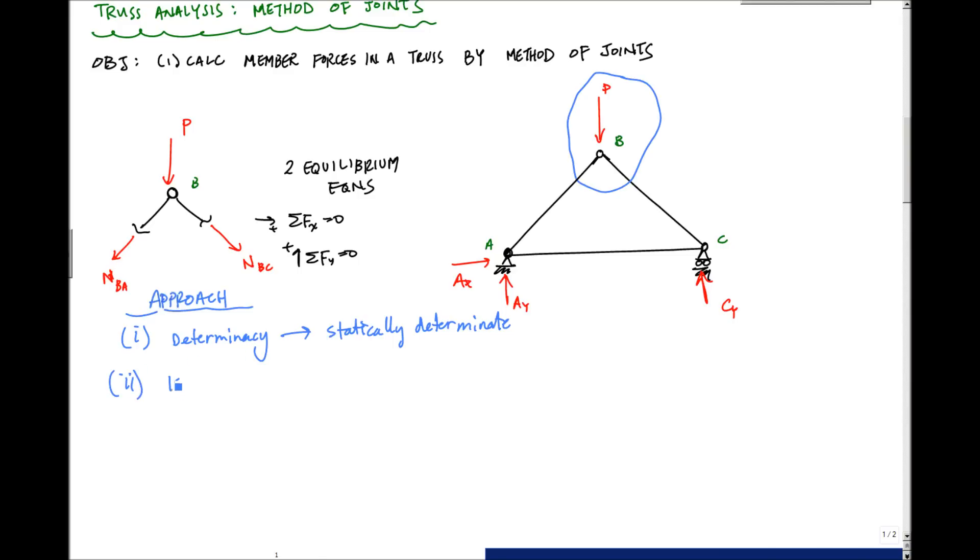And then two, you want to isolate a joint, isolate joints, draw the FBD. And when you isolate the joint, you really want to isolate where there's only two unknowns. That's really all you can handle because you only have two equilibrium equations. For instance, the unknowns here are the member forces in AB, member BC, and member AC. That would be three unknowns or three member forces. And then also my reactions, AX, AY.